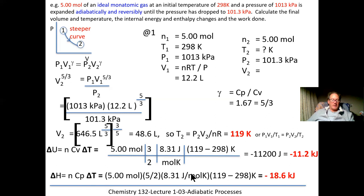Now delta H = nCp·ΔT. Enthalpy change uses Cp because enthalpy is calculated at constant pressure. Substituting: 5 mol × (5/2 × 8.314 J/(mol·K)) × (119 − 298 K). Delta H is also negative — the gas is expanding and the system has done work on the surroundings. The result is delta H = −18.6 kJ (three significant figures).